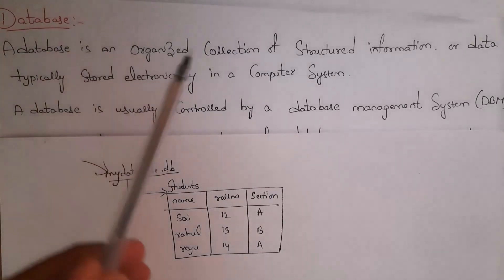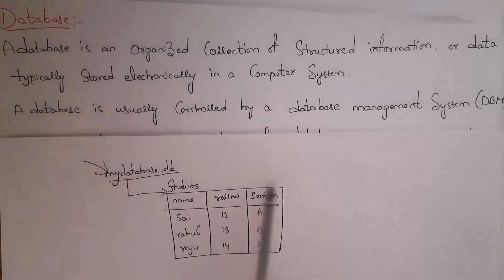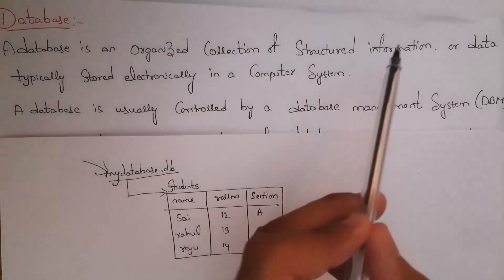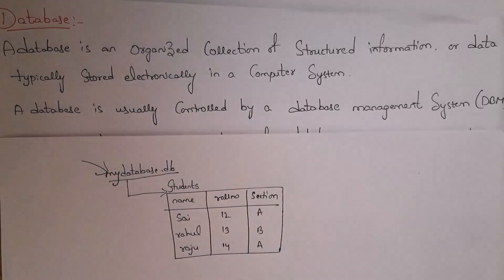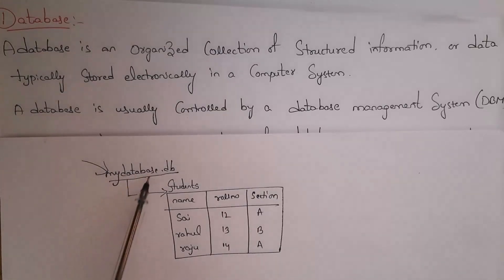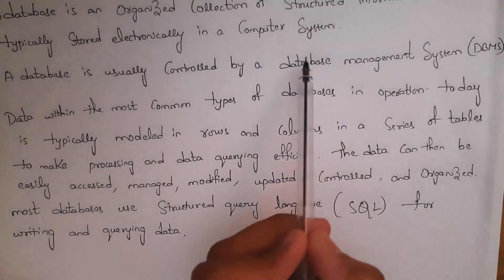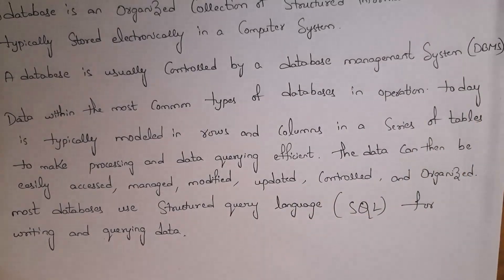'Structured information' means data is stored in structured format, like in tables — tables are a structured format. A database is usually controlled by a database management system (DBMS). This DBMS is software, and by using this software we can create a database and perform various operations on the database.